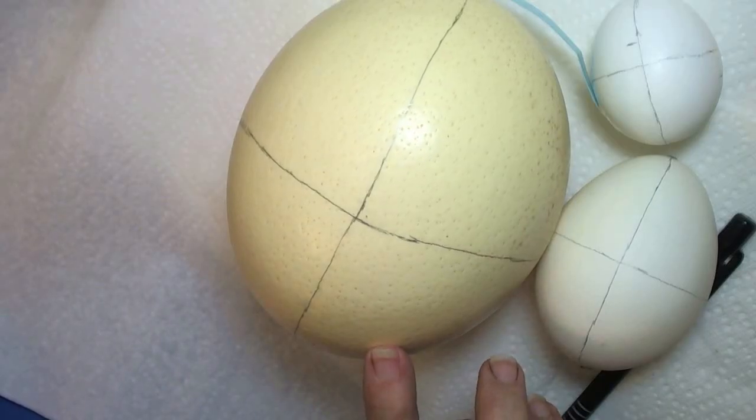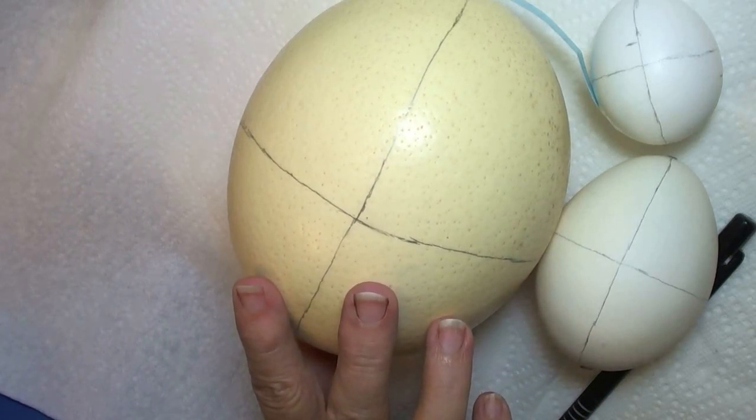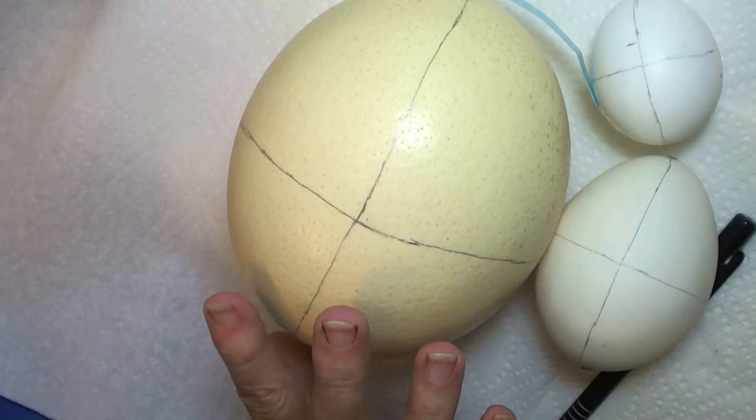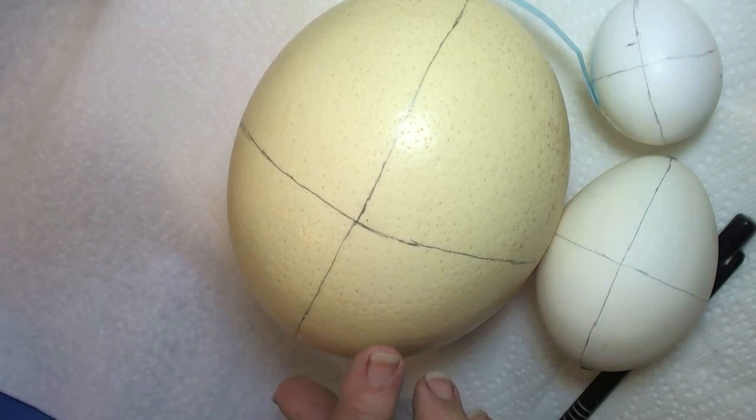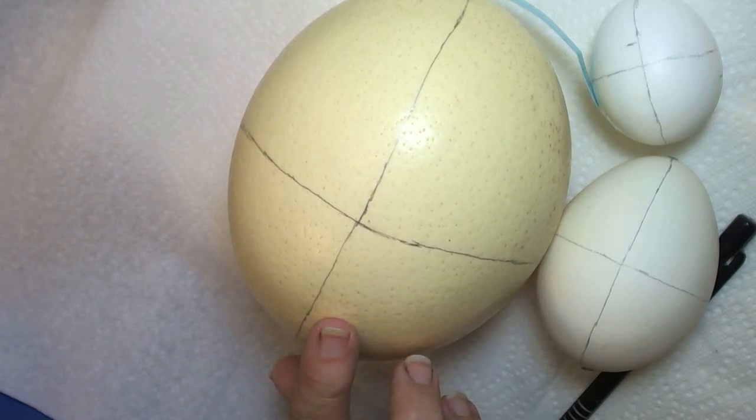The circles can be used on any size egg, but since my project is going to be on an ostrich egg I will be showing you how I made my circles on the ostrich egg.